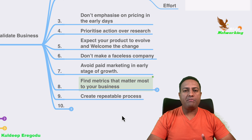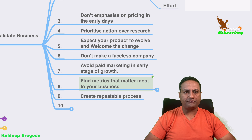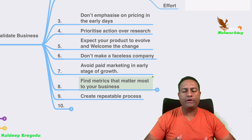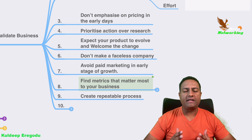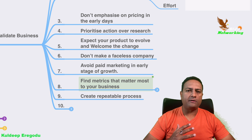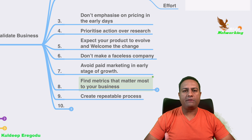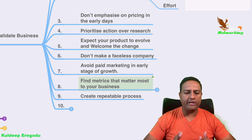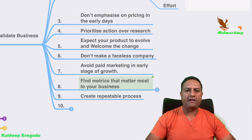Step nine: create repeatable processes. There are tasks you need to keep repeating — your R&D, your innovation, constantly serving feedback and giving answers. These are all repetitive processes which you need to formalize and keep iterating.